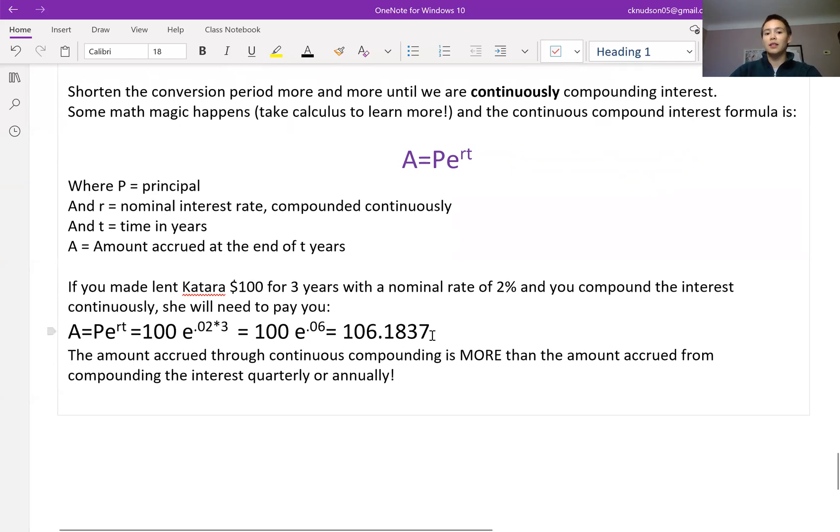So we can see this is definitely more than if we just used simple interest and it's also more than if we used compound interest compounding it annually or quarterly. So if you are investing or lending money to someone, it's better for you to do the compounding more and more frequently, ideally continuously.